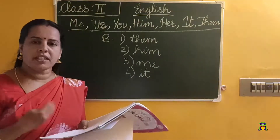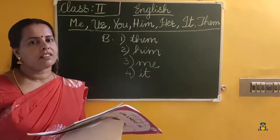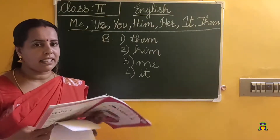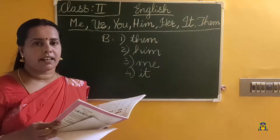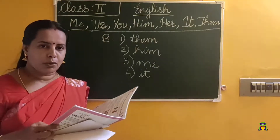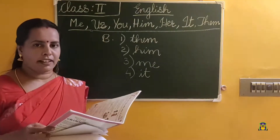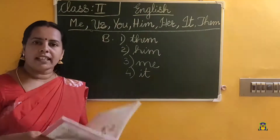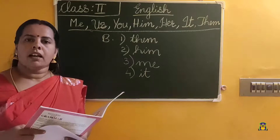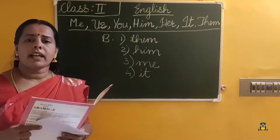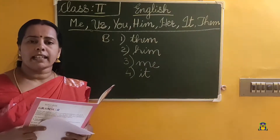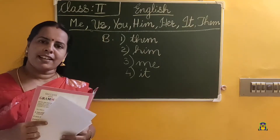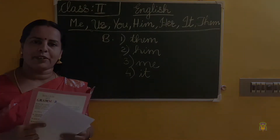Questions 5 to 10 in B exercise you should do as homework — it's very easy. Just choose the correct answer, read the sentence properly and choose the correct option. You should read chapter A thoroughly, and do all the exercise questions. See you in the next class. Thank you. Bye-bye.